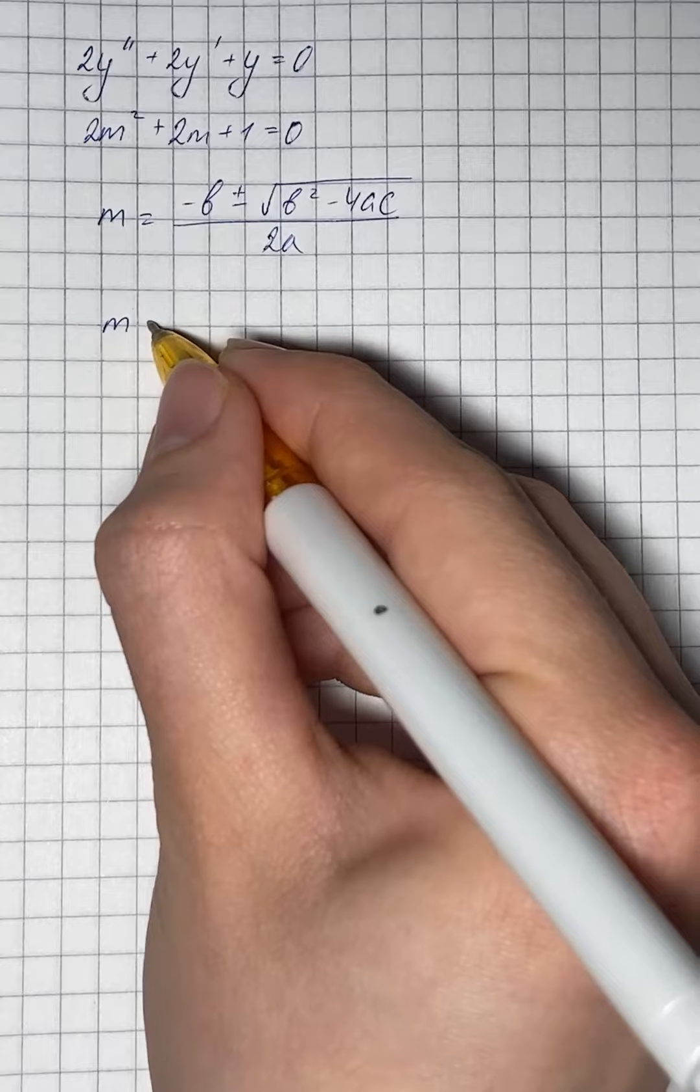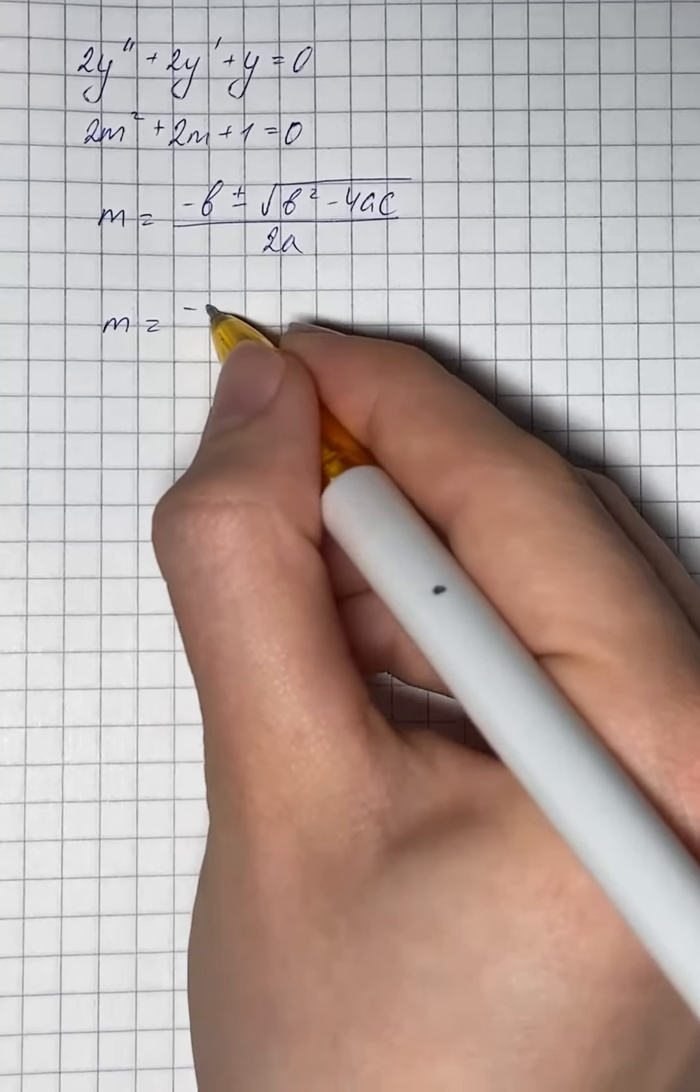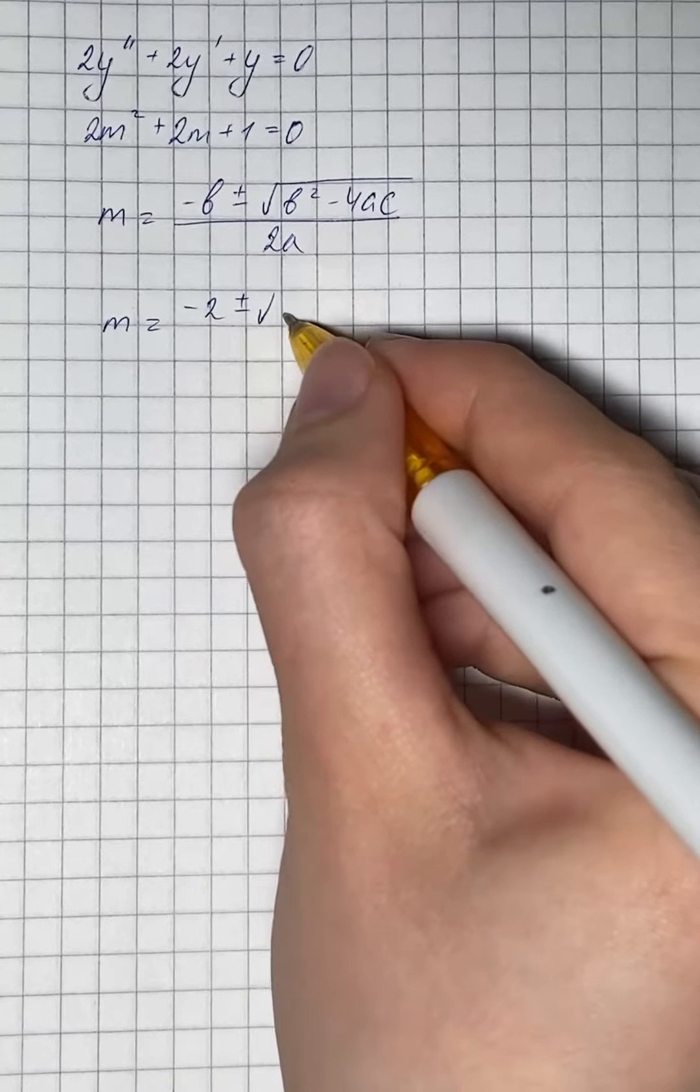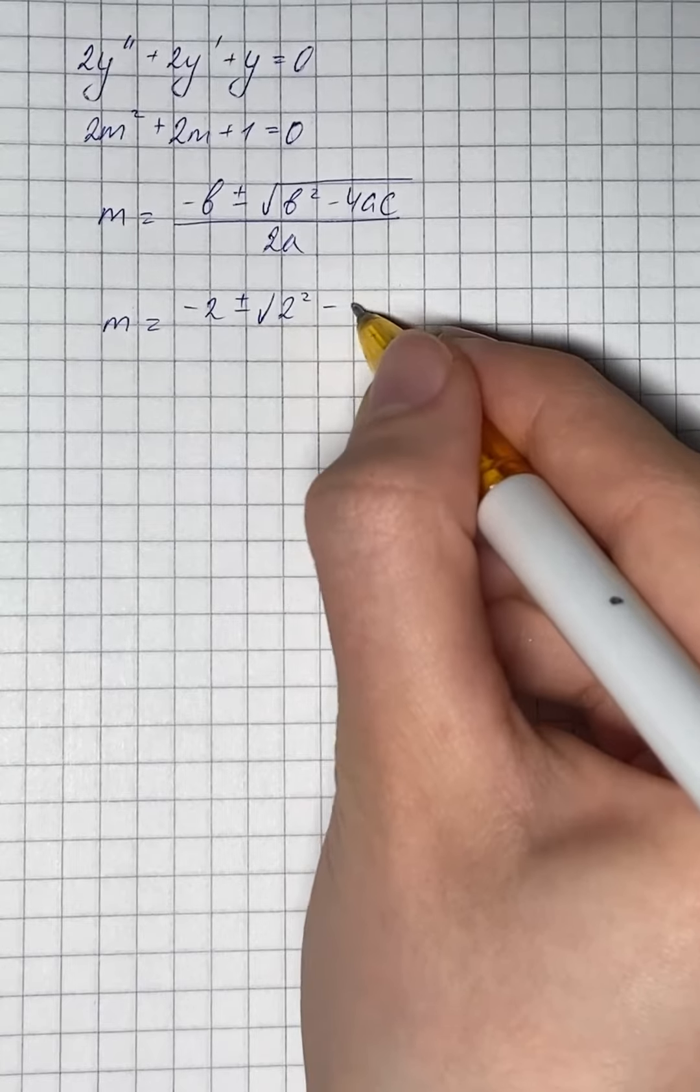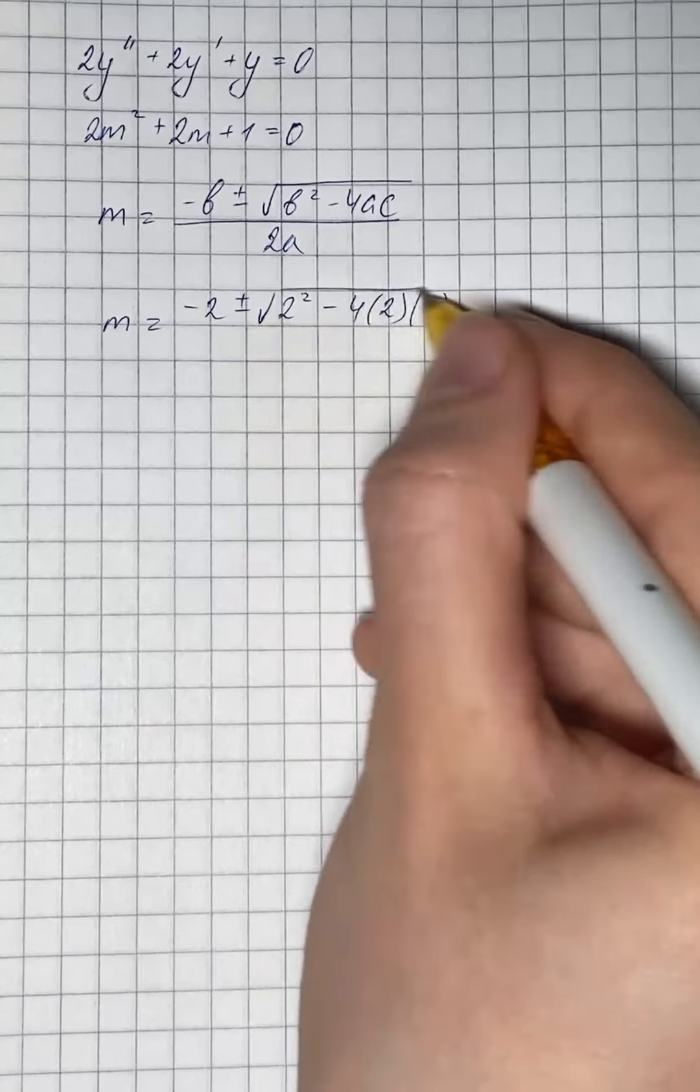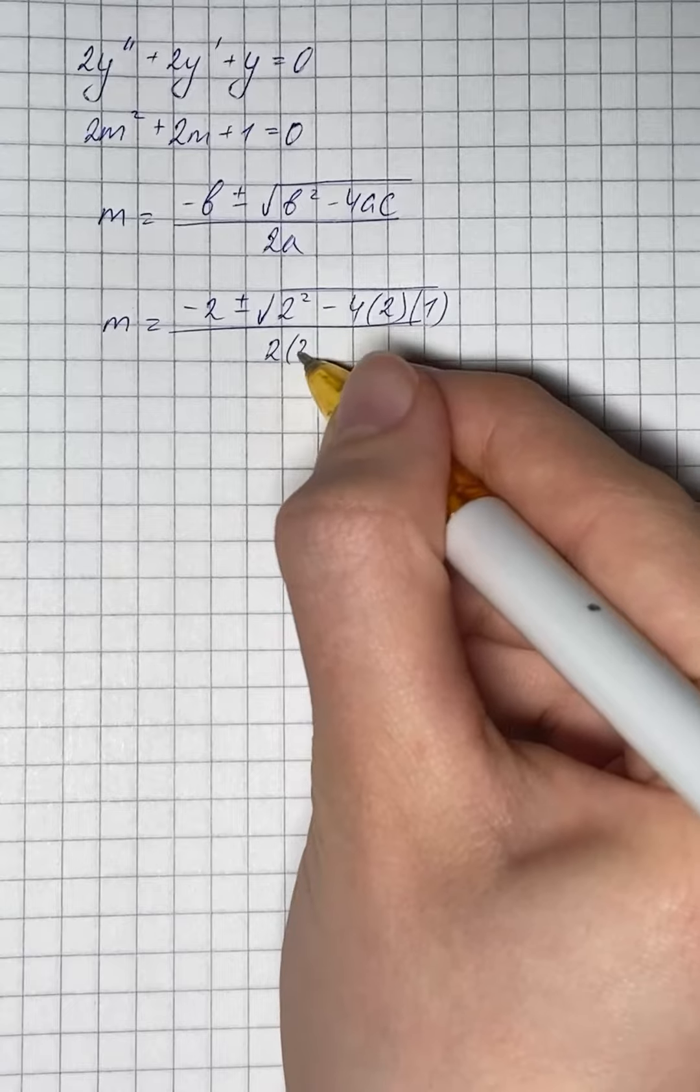So in our case, m equals negative 2 plus or minus square root of 2 squared minus 4 times 2 times 1, all over 2 times 2.